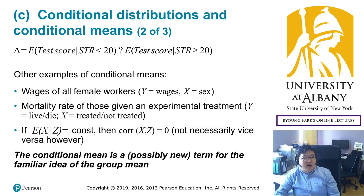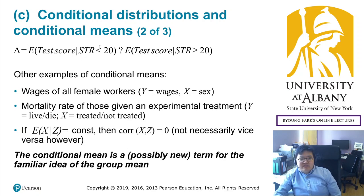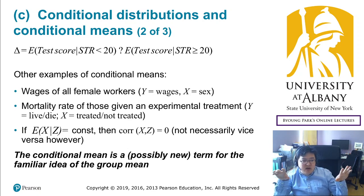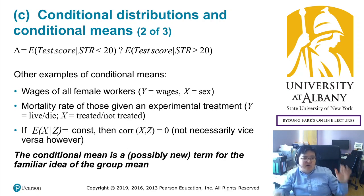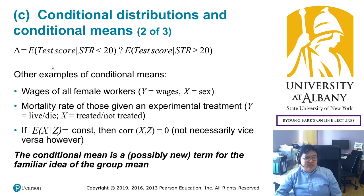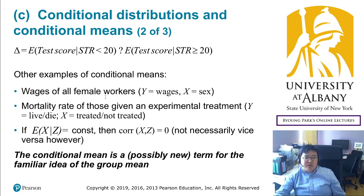We may define delta as the expected test score for small class size minus the expected test score for large class size. Under different conditions, this gives us the change in expected test scores, which is what we want to estimate or forecast. There are many examples of conditional means: wages of all female workers versus all male workers and their difference, or the mortality rate of those given an experimental treatment — for example, the difference in survival rate between those vaccinated for COVID and those who are not.